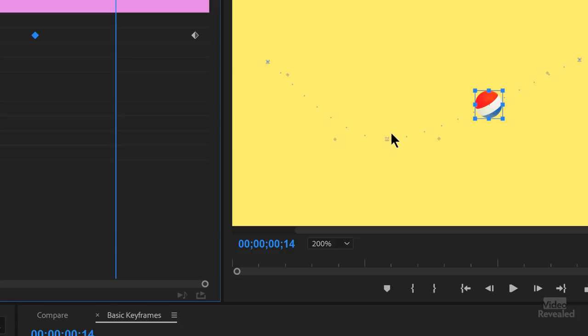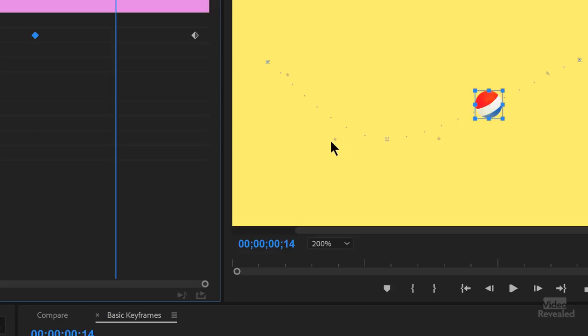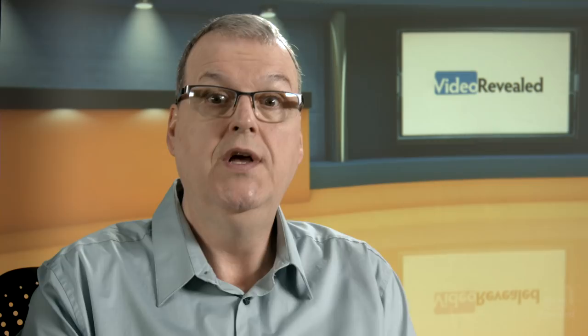If you move this handle and we look, you can see it changed to continuous Bezier. So the Auto, if we go back there, it's going to put it in Auto. So as soon as you touch that, it's going to do something different. So that's the spatial interpolation.